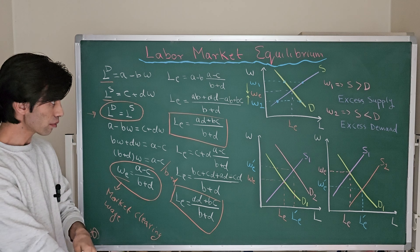At the intersection point, the wage rate is called the market clearing wage W_E, and the quantity is called the market equilibrium quantity L_E.